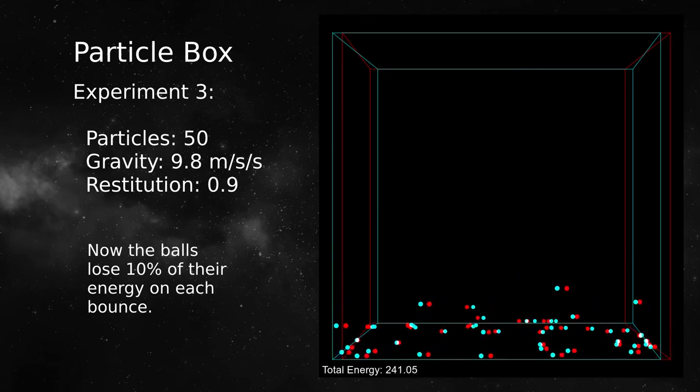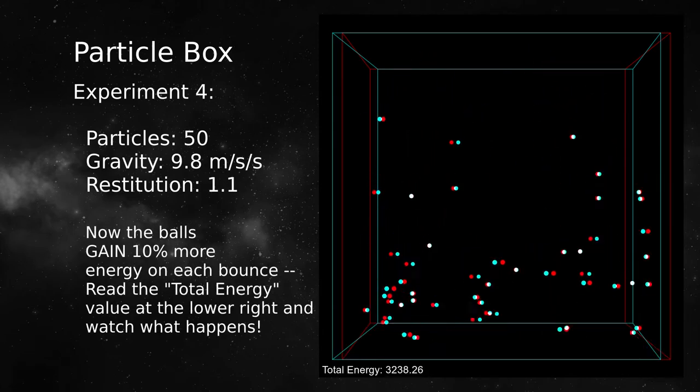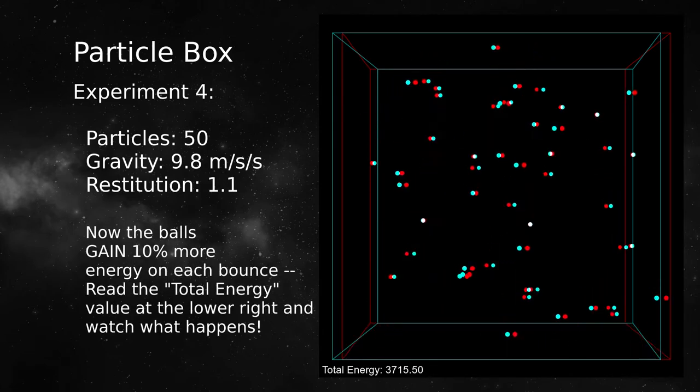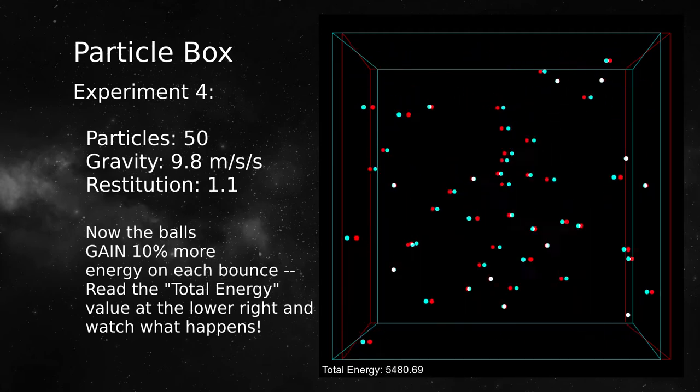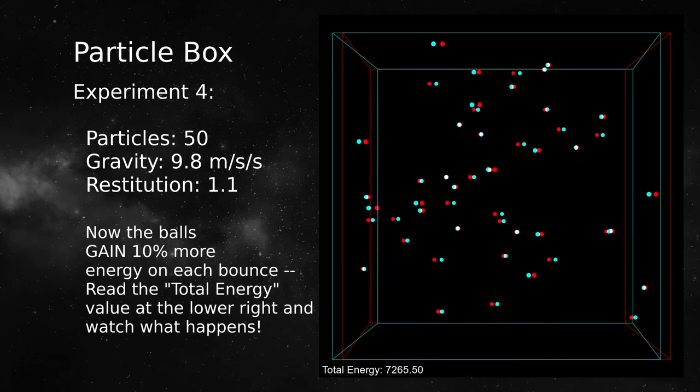The particles gradually lose all their energy. The restitution value is now 1.1, meaning the particles gain 10% energy on each bounce. This is like a boiling kettle over a flame. The energy level increases over time.